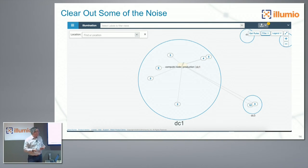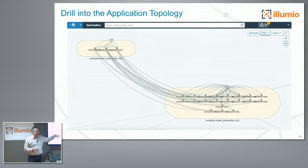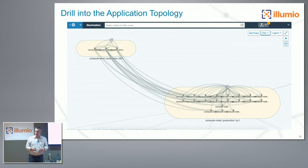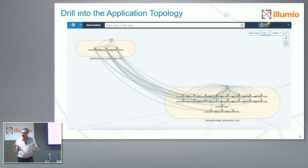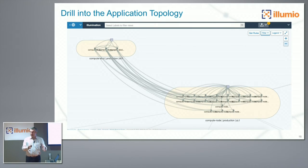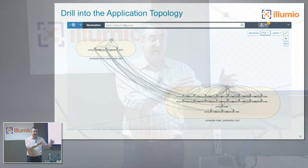Then you dive deeper and actually understand the application topology — here's a compute node cluster talking to a Xen daemon, a Xen cluster for service discovery. This is how you explore data well before enforcement. You need that understanding: the distributed architecture is how you do enforcement, and it's the only way to make a system scale to data center size.